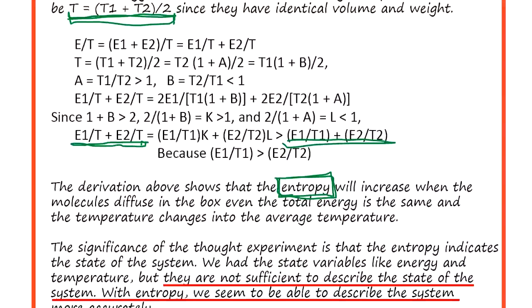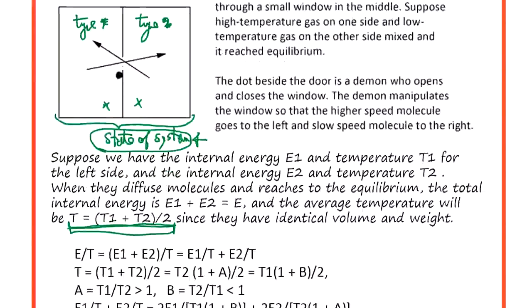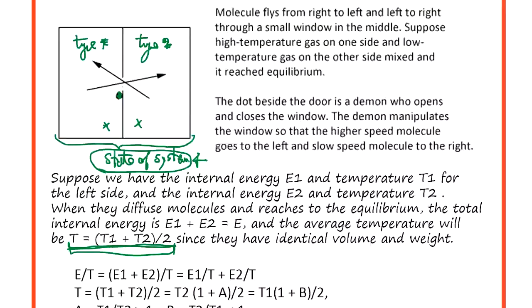Now Maxwell argued: if there is a demon here and it opens the window, so when high temperature - say this is high temperature - we can use type one, type two gas too, but in order to make the argument simple, consider low temperature and high speed molecules. High speed can pass; if it's lower speed, let it pass. Other than that, this demon closes the door.